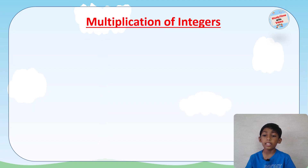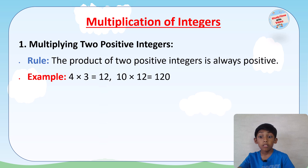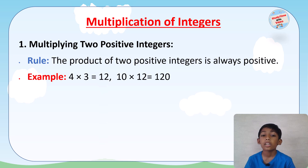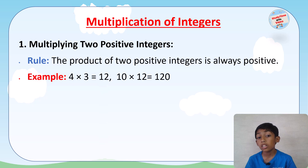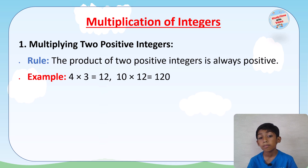How to multiply the integers — we can multiply the integers with the help of some given rules. For the first rule, when multiplying two positive integers, the product is always positive.